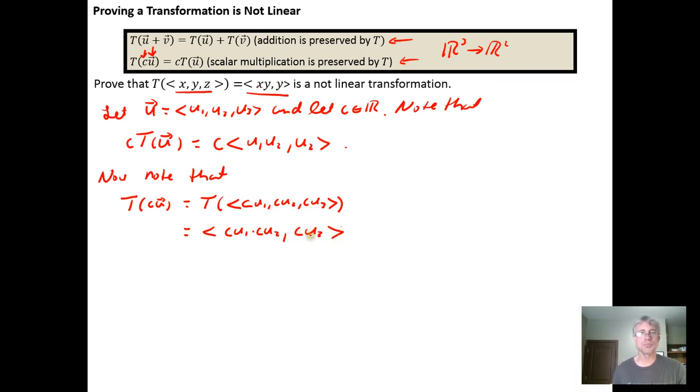Which is equal to, sometimes if we factor out the C, here we see that we have a C times C. So one C would get left behind. C U sub one, U sub two, comma U sub two.